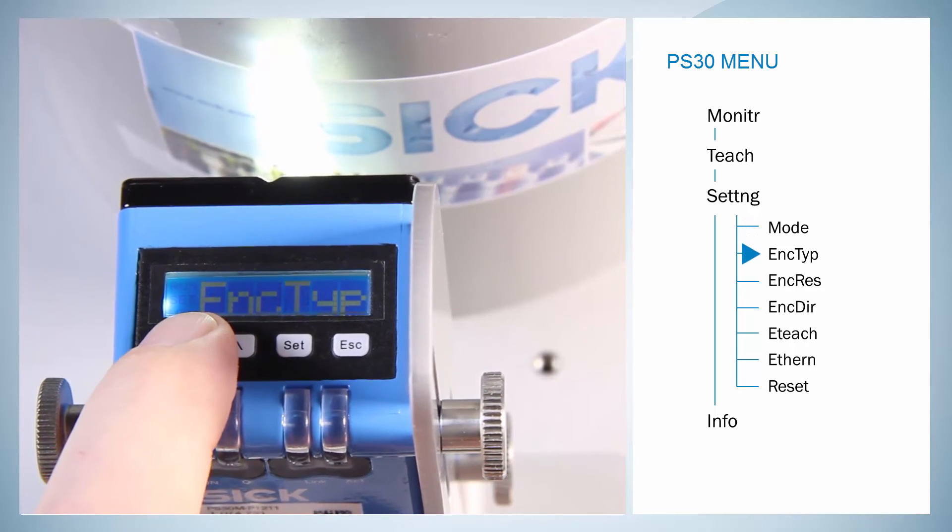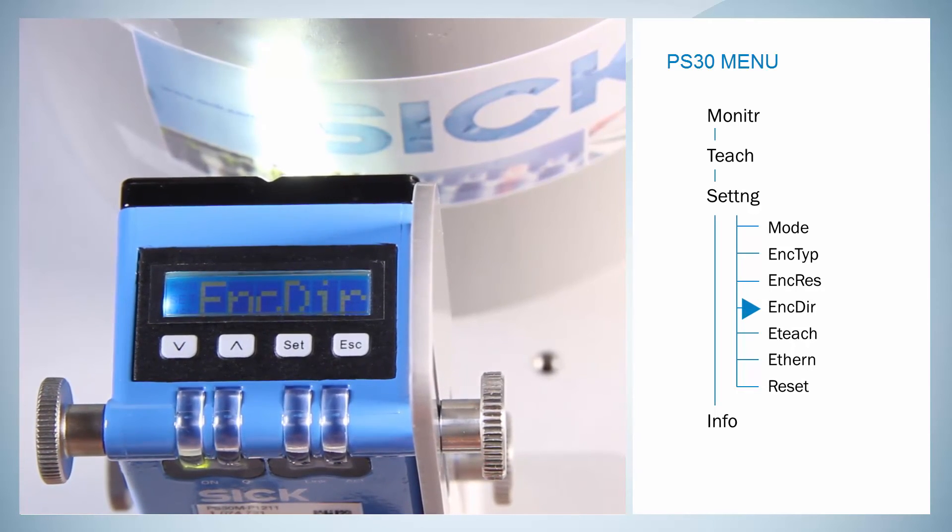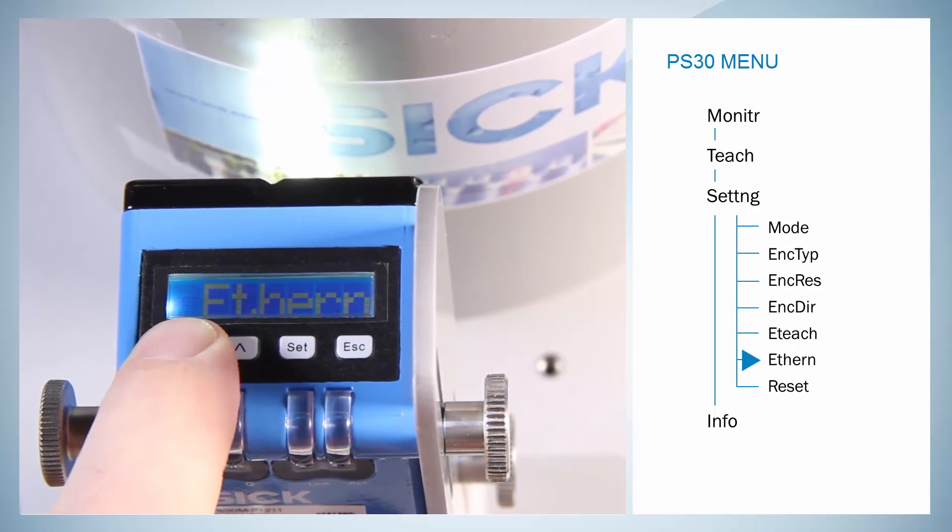The three menu items encoder type, encoder resolution and encoder direction allow the modification of the first installation settings. Further menu items are the settings for the external Teach as well as the Ethernet configuration.